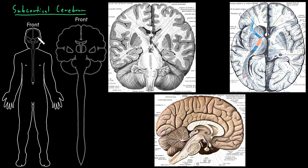Recall that the cerebrum is the top part of the brain. Inside the cerebrum, we have both gray and white matter. I have a few different illustrations here. There are some gray matter nuclei and white matter, and then the entire cerebrum is covered with gray matter that we call the cerebral cortex.